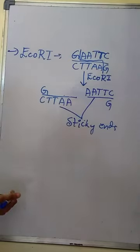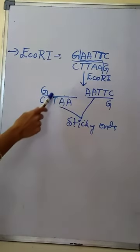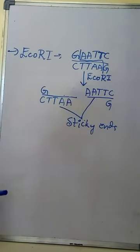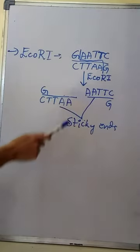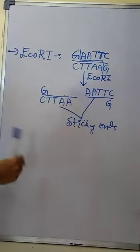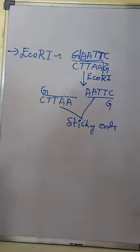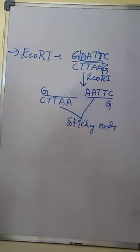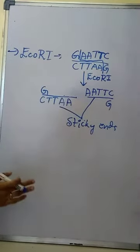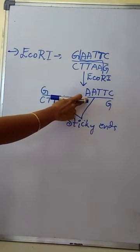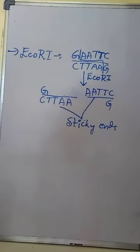These single-stranded free ends of the DNA can join with similar complementary ends. Complementary ends means here A-A-T-T; this region can form complementary base pairing with A-A-T-T. So sticky ends — the free single-stranded ends of the DNA — can join with the similar complementary ends of DNA fragments. This region forms complementary base pairing with A-A-T-T, and the other forms complementary base pairing with T-T-A-A. Such ends are called sticky ends.